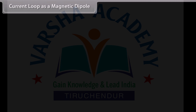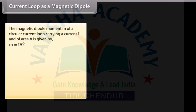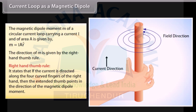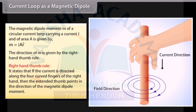The magnetic dipole moment M of a circular current loop carrying a current I and of area A is given by M = I A R-hat. The direction of M is given by the right hand thumb rule, which states that if the current is directed along the four curved fingers of the right hand, then the extended thumb points in the direction of the magnetic dipole moment.